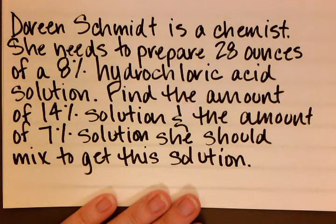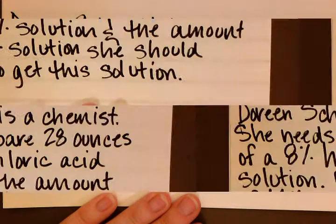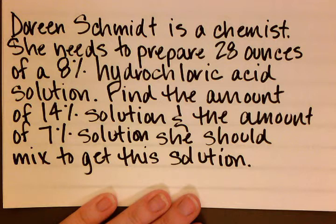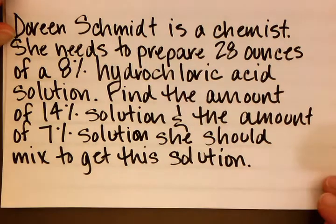Doreen Schmidt is a chemist. She needs to prepare 28 ounces of an 8% hydrochloric acid solution. Find the amount of 14% solution and the amount of 7% solution that she should mix to get this solution.